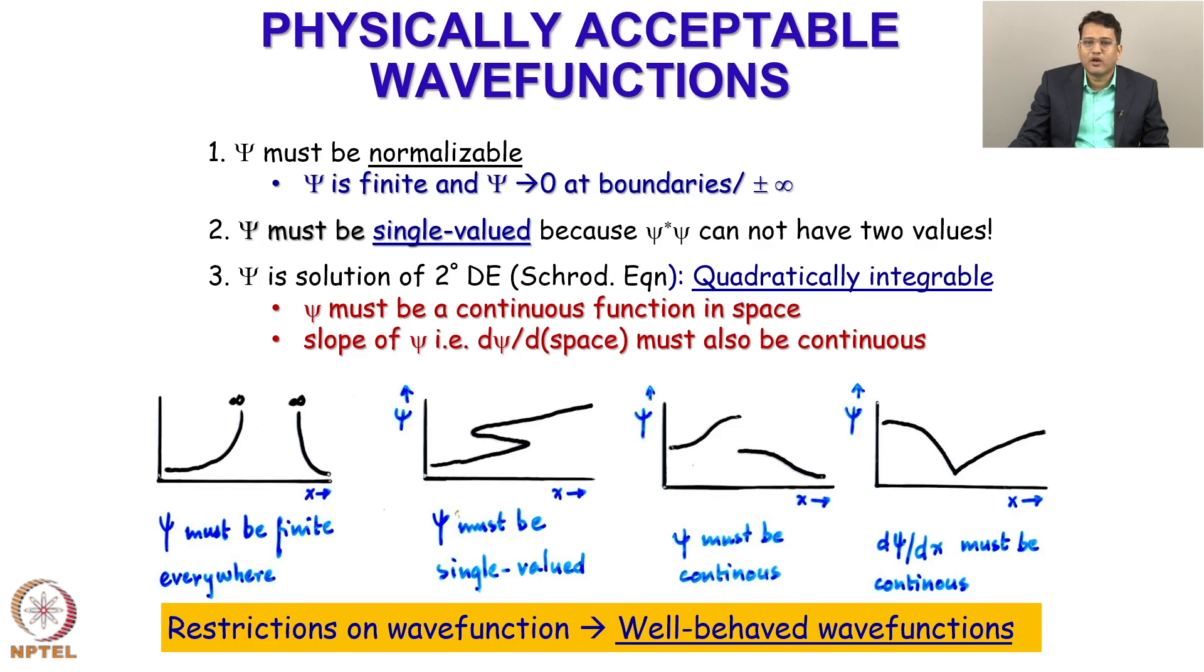Because psi is a solution of a second order differential equation, that is Schrodinger equation, psi has to be quadratically integrable. And because it is a probability, psi must be a continuous function in space because the probability cannot change suddenly. As well as the slope of psi, that d psi by the space variable dr or dx, must also be continuous.